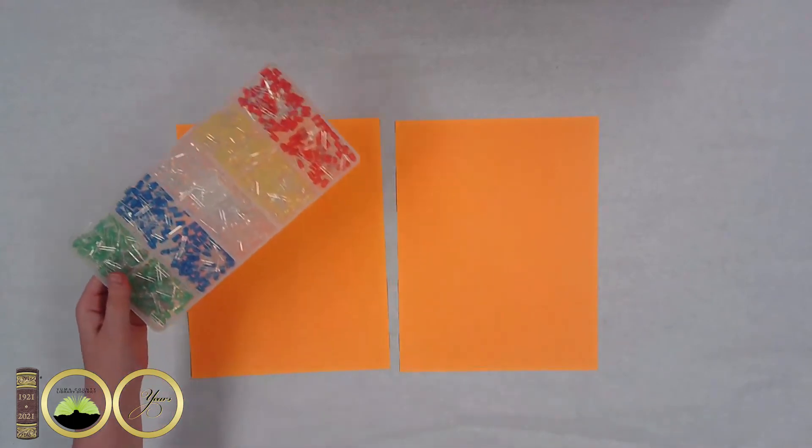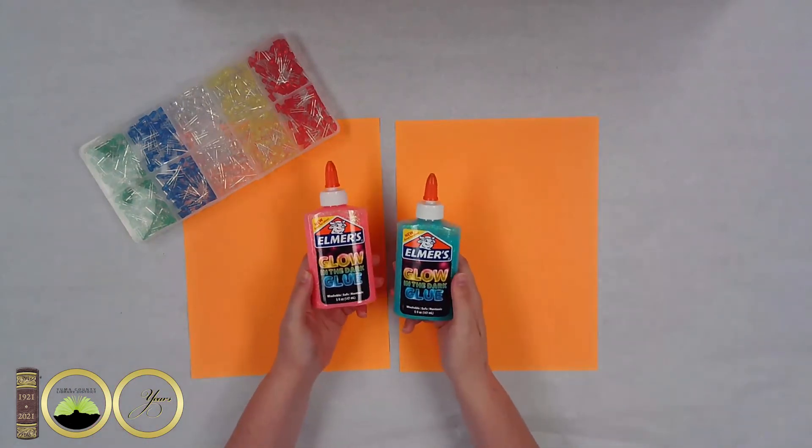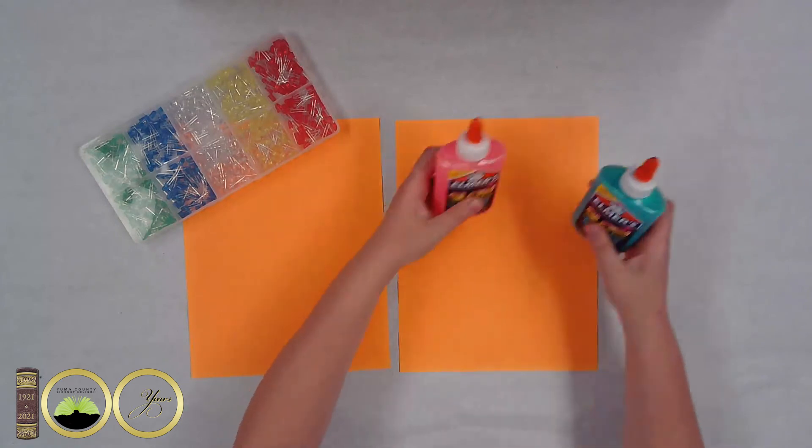Also we'll need five millimeter LED bulbs. You can find those on Amazon. We'll need Elmer's Glow in the Dark Glue, whatever color you prefer.